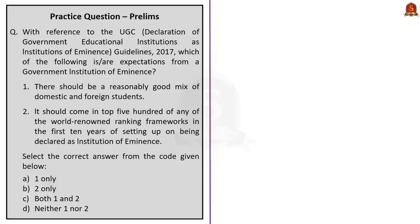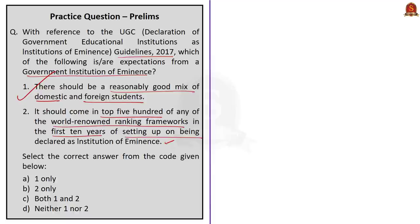Now see this question: with reference to the UGC's Declaration of Government Educational Institution of Eminence Guidelines 2017, which of the following is or are the expectations from a government institution of eminence? It is a two-statement-based question. Statement 1: there should be a reasonably good mix of domestic and foreign students — this statement is correct. Statement 2: it should come in the top 500 of any of the world's renowned ranking frameworks in the first 10 years of being declared an institution of eminence — this statement is also correct.